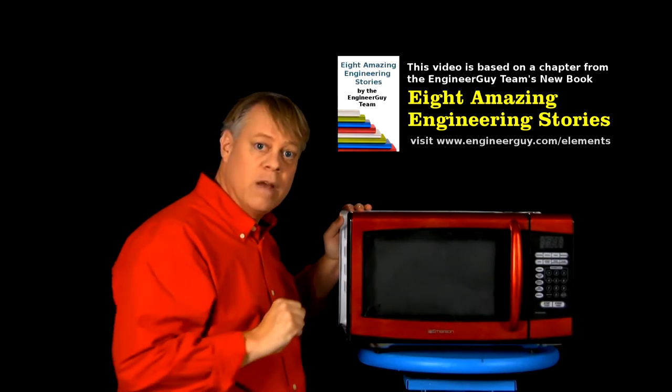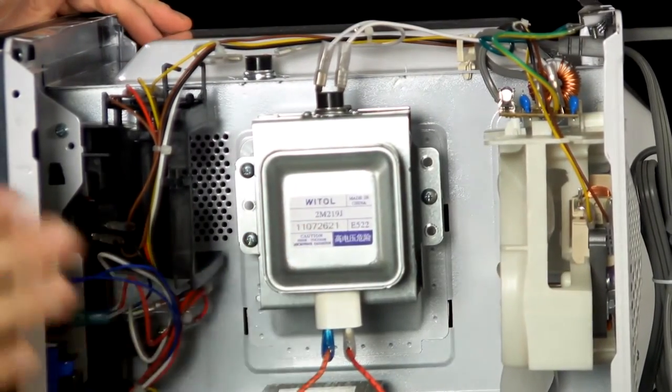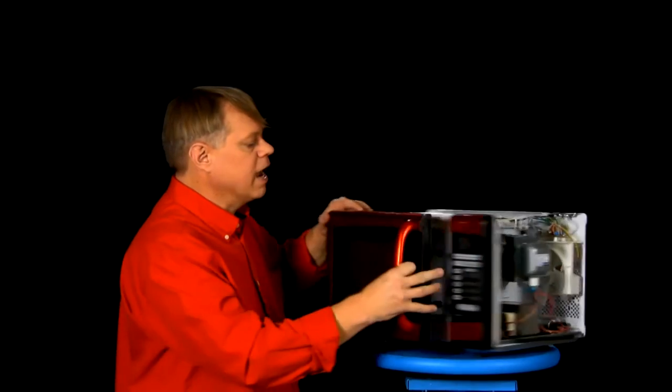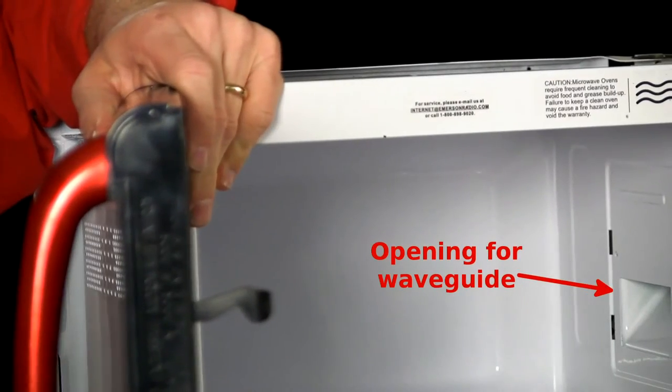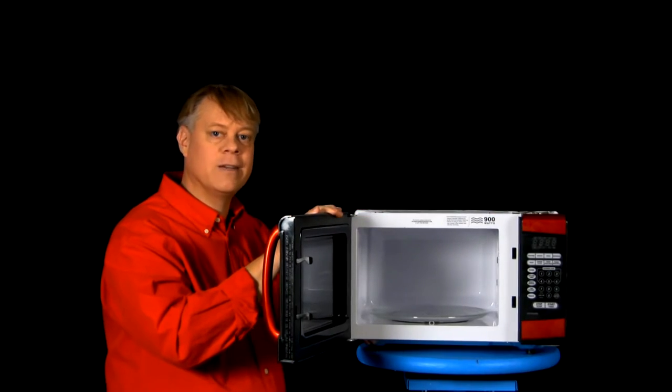Now, a microwave contains three main components: a vacuum tube called a magnetron that generates the energy that heats food, a waveguide hidden in the wall to direct that energy to the food, and a chamber to hold the food and safely contain the microwave radiation.